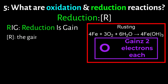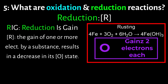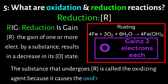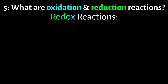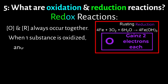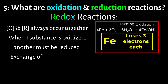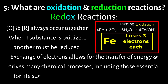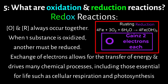Reduction — the gain of one or more electrons by a substance — results in a decrease in its oxidation state. The substance that undergoes reduction is called the oxidizing agent because it causes the oxidation of another substance. It's important to note that oxidation and reduction always occur together. This exchange of electrons allows for the transfer of energy and drives many chemical processes, including those essential for life such as cellular respiration and photosynthesis.